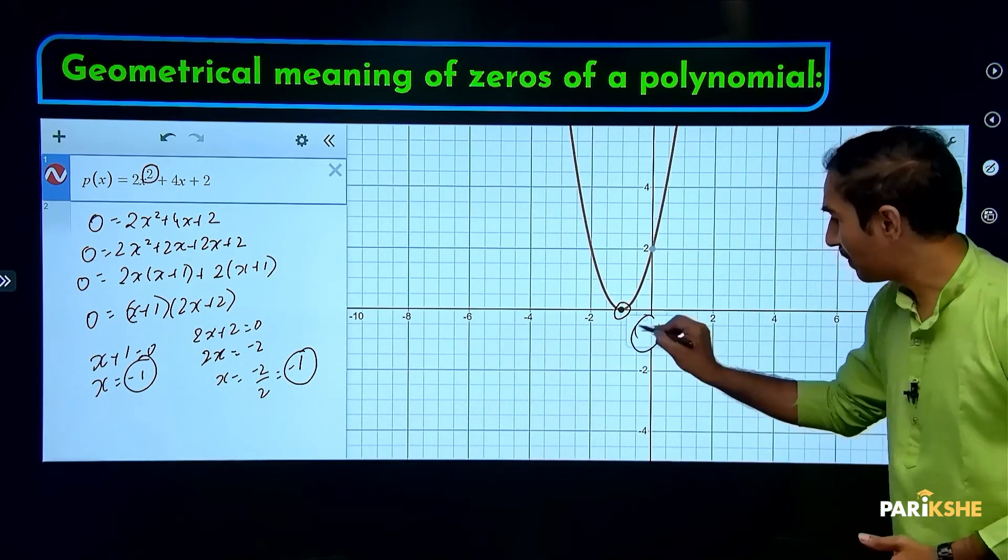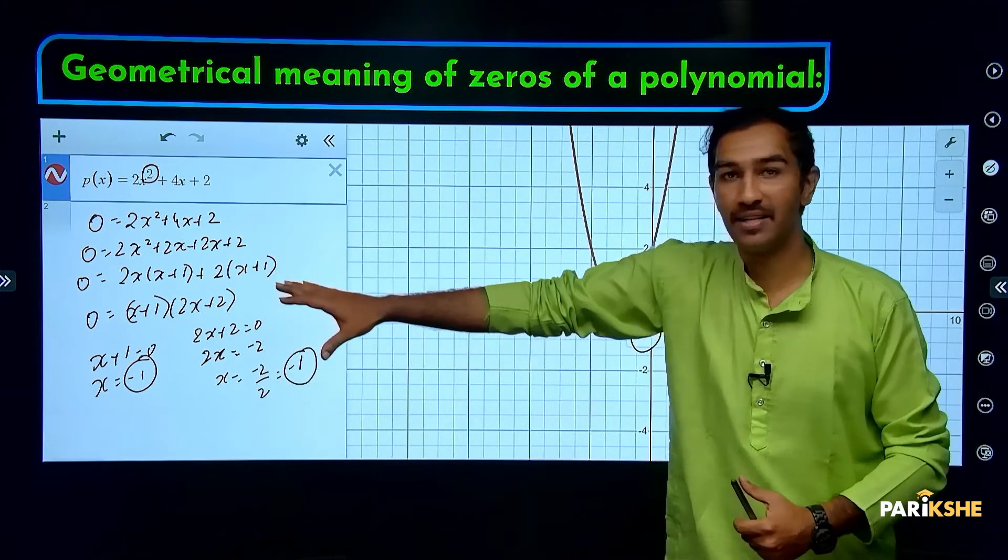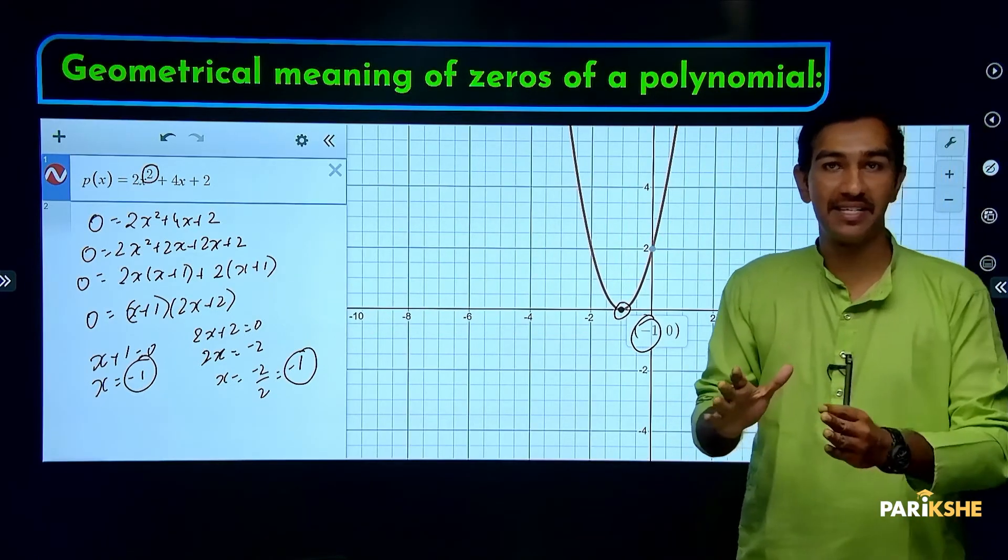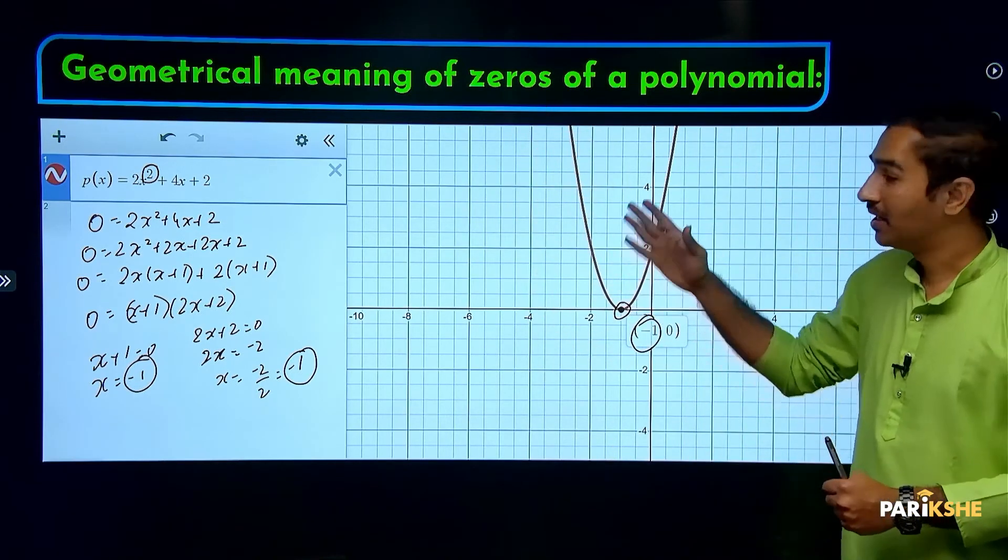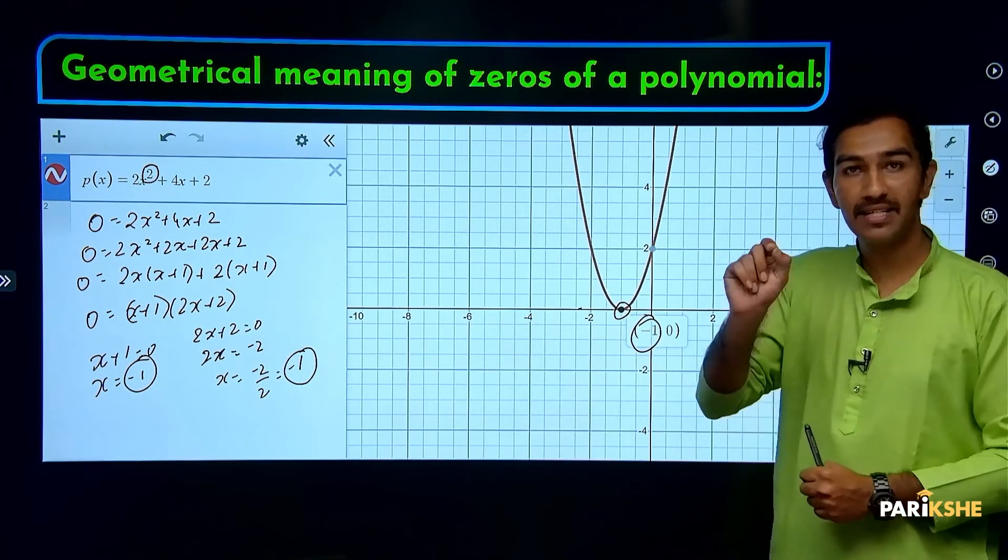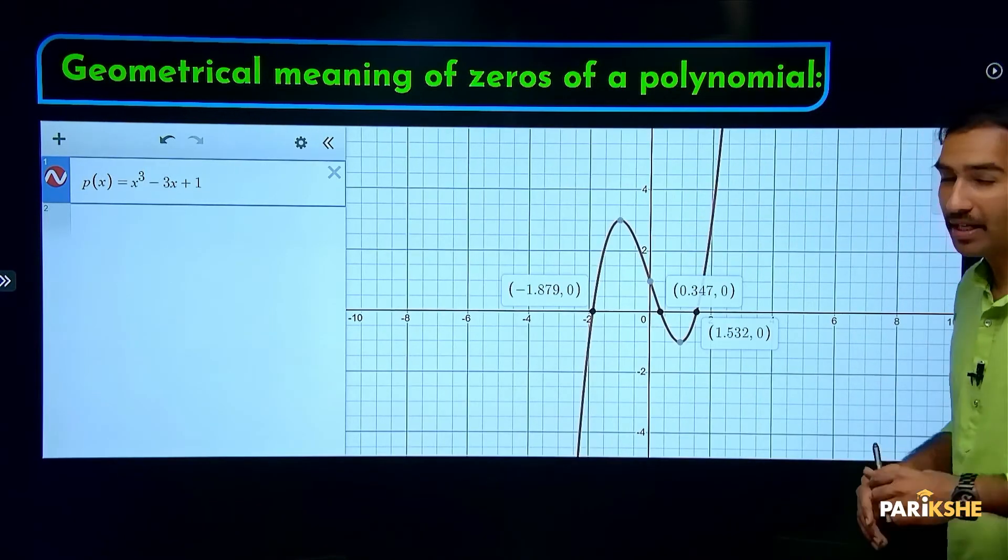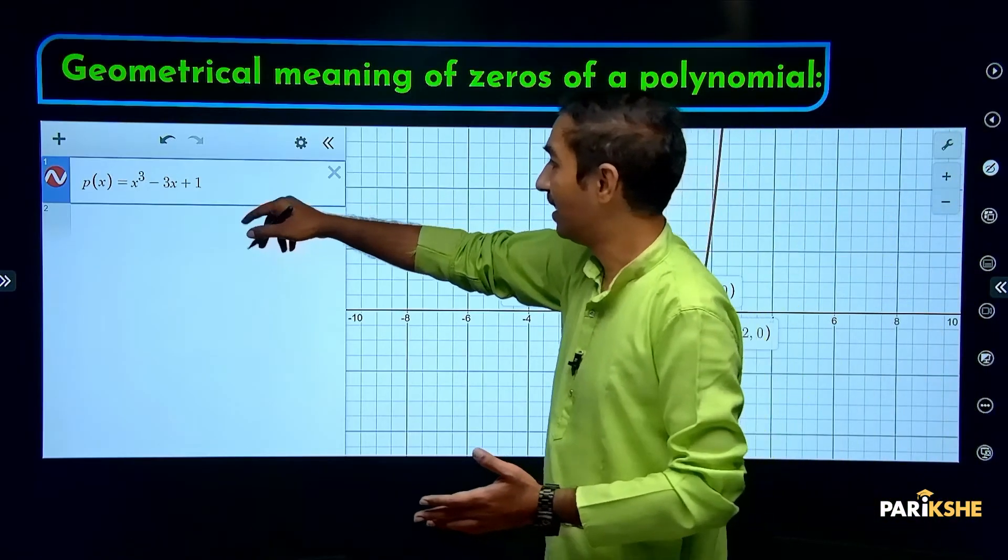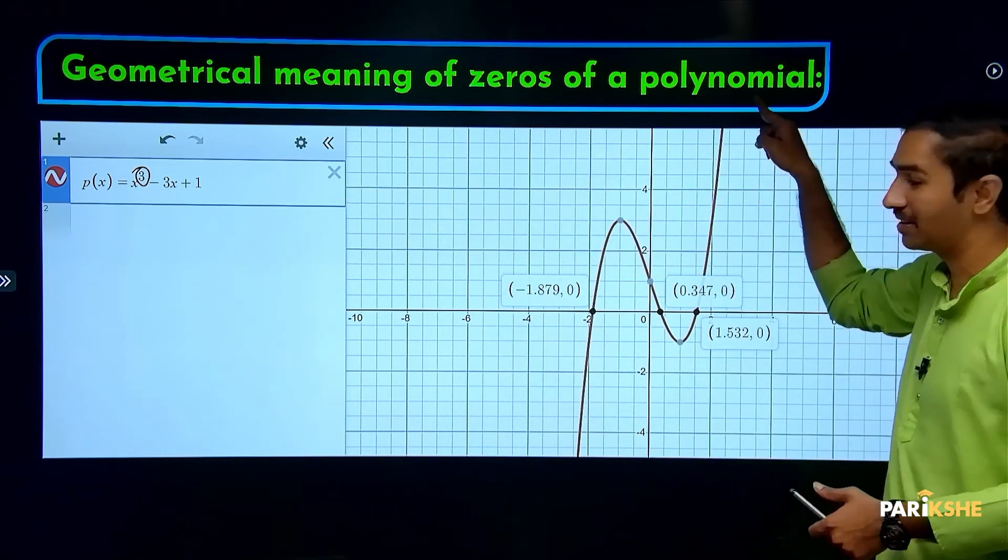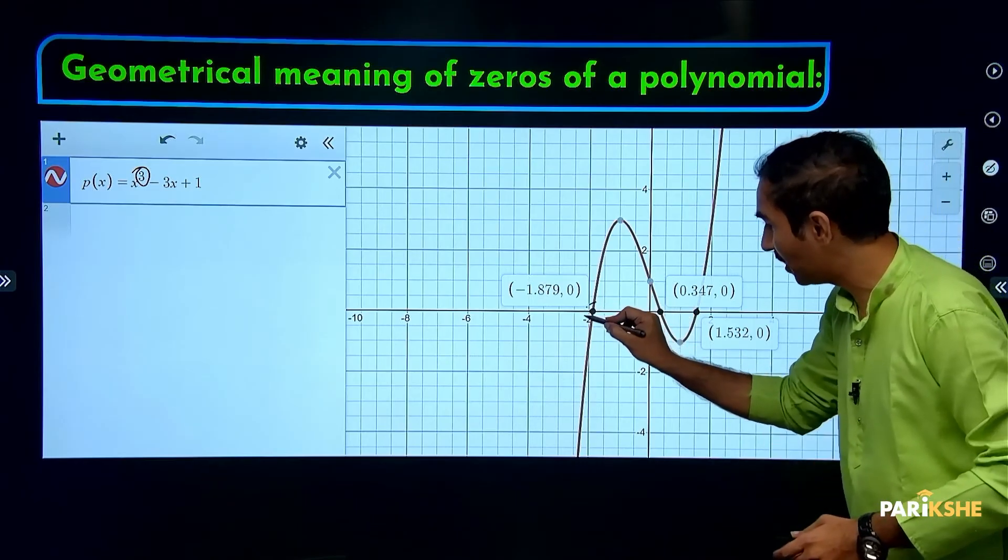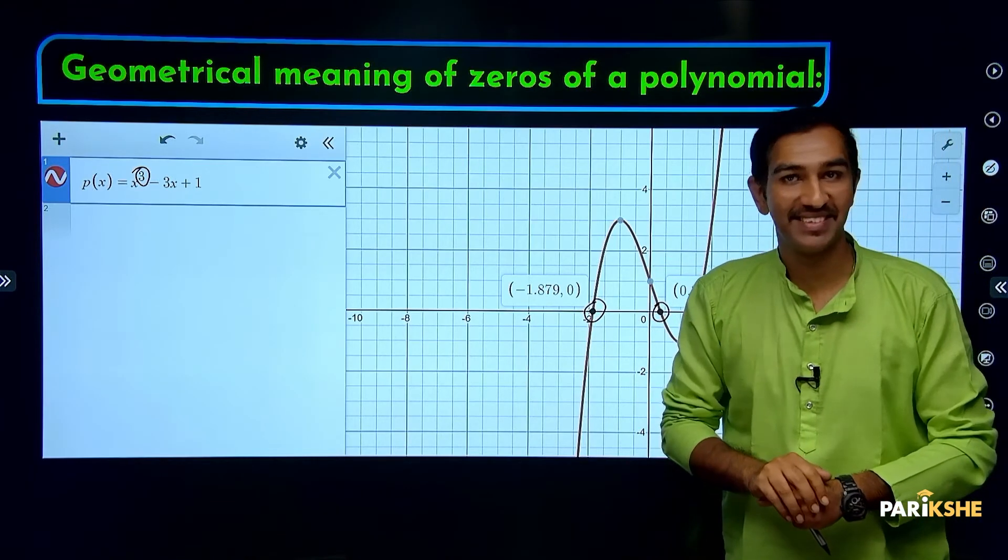Now take degree 3, which is called cubic polynomial. When we plot the cubic polynomial graph, it can touch the x-axis at three points: 1, 2, 3. So there are 3 zeros.